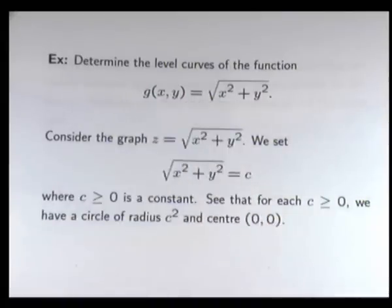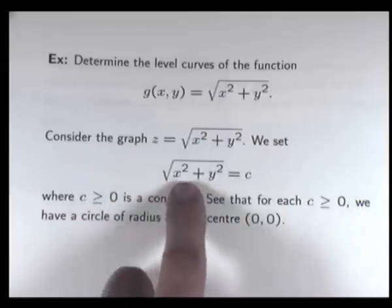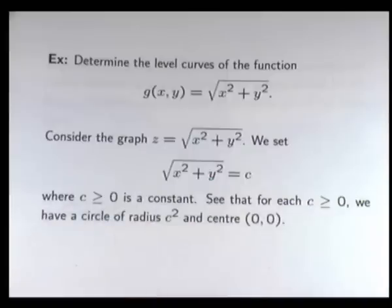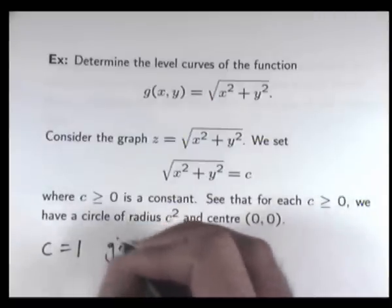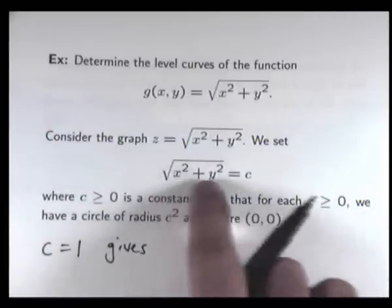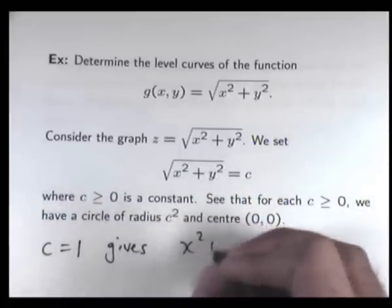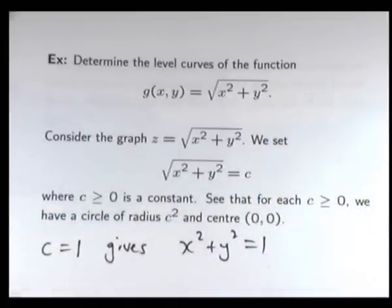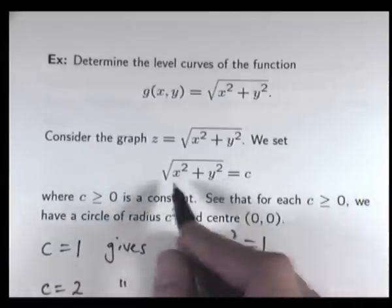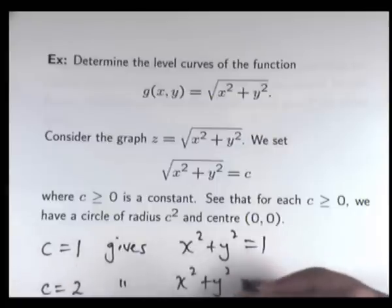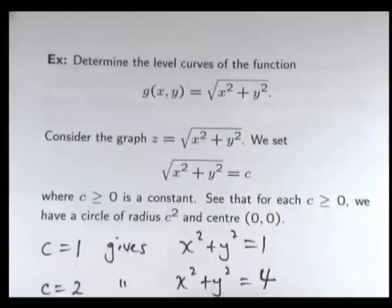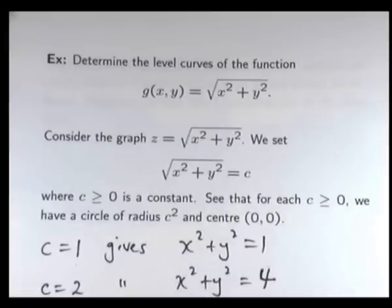Here's a similar problem, but slightly different because we have a square root sign. Does that change things? Again, we let F equal a constant and choose different values. Choosing C equals 1, we get the square root of X squared plus Y squared equals 1; squaring both sides gives a circle again. C equals 2 gives X squared plus Y squared equals 4, and C equals 3 gives X squared plus Y squared equals 9 — basically the same circles as before for our level curves.